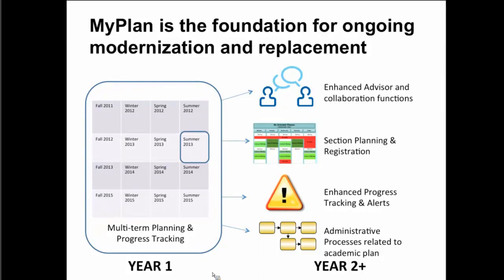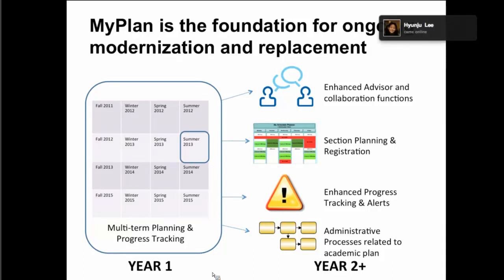Enhanced progress tracking and alerts: we're going to look to ways to handle email notifications for some of the most critical information in year one, but there have been requests for that to be expanded. Administrative processes related to academic plan — and not just the administrative processes, but there's quite a bit of reporting that could be really compelling. The Naval Postgraduate School conducts their curriculum planning completely on demand-based curriculum planning, allowing students to indicate what they're interested in and then forming their curriculum around that. There's some gray area where this kind of data could allow departments or the university to be more responsive to student interests.